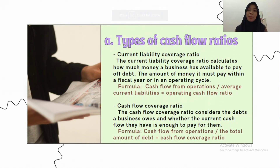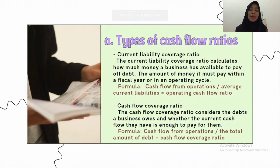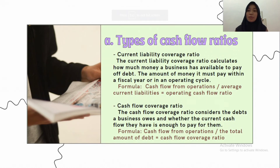The next is the cash flow coverage ratio. This ratio considers the debts a business owes and whether the current cash flow is enough to pay for them. The resulting number reveals how many times a business can pay its principal amount and interest with its current cash flow, providing insight into the business's ability to meet current obligations. The formula is: cash flow from operations divided by total amount of debt.